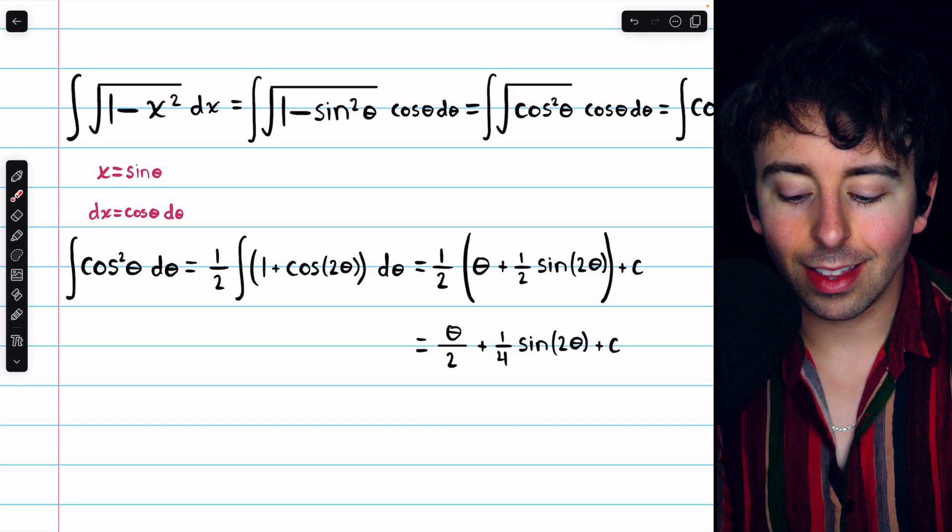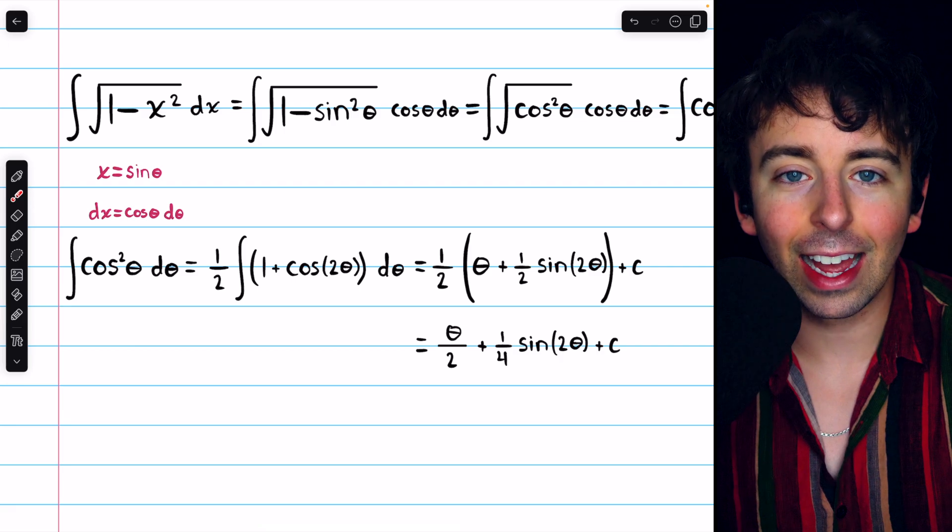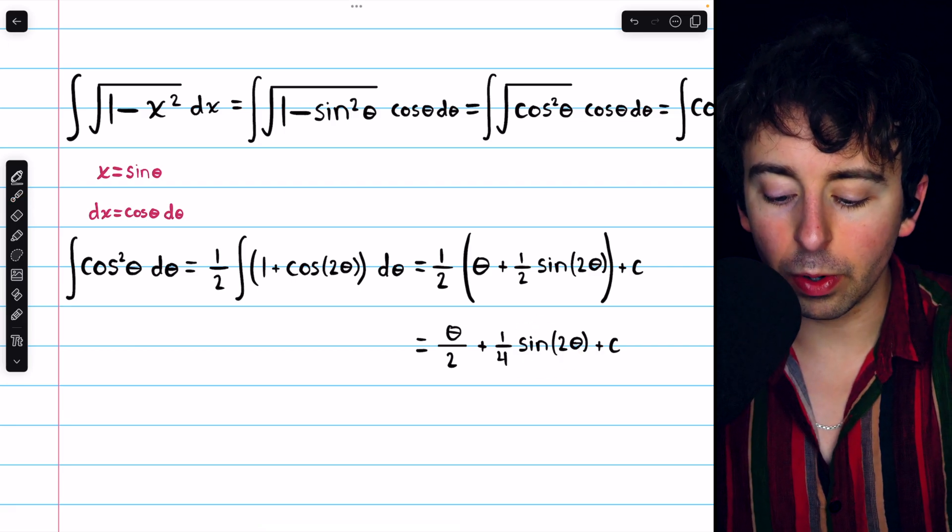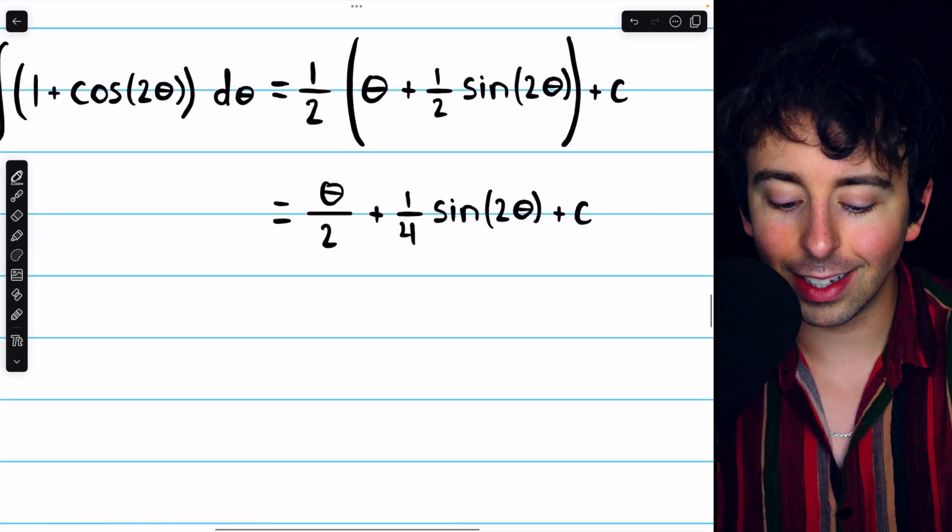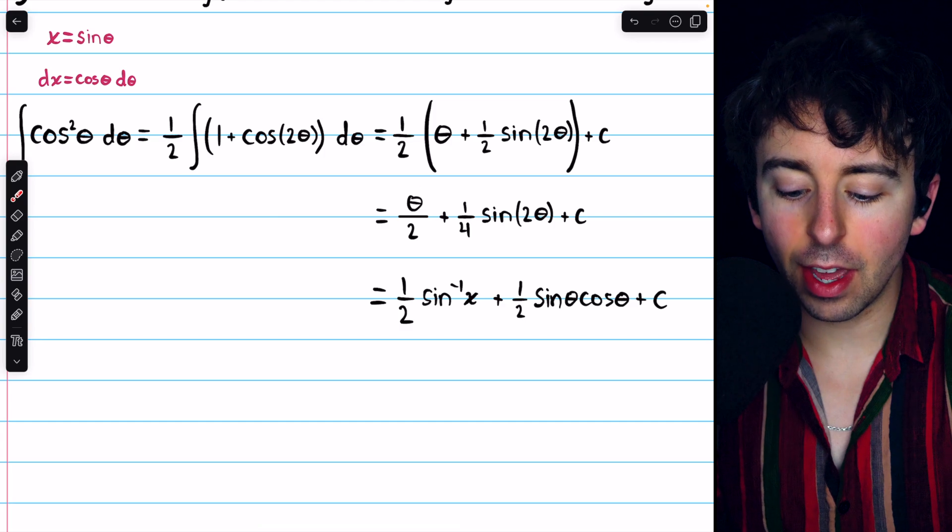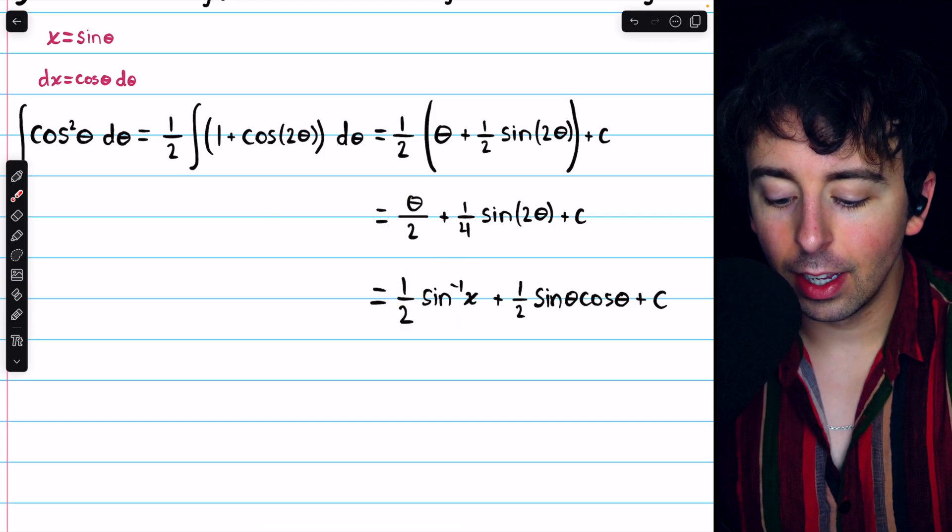We know that x equals sine theta, so this theta is just arc sine x. As for sine of 2 theta, we'll be able to do some work with that by using the double angle identity. So, solving x equals sine theta for theta, we then have that theta over 2 is 1 half arc sine x.